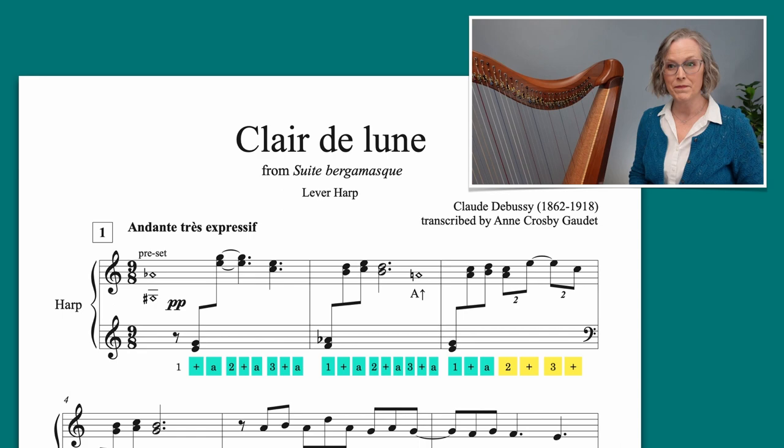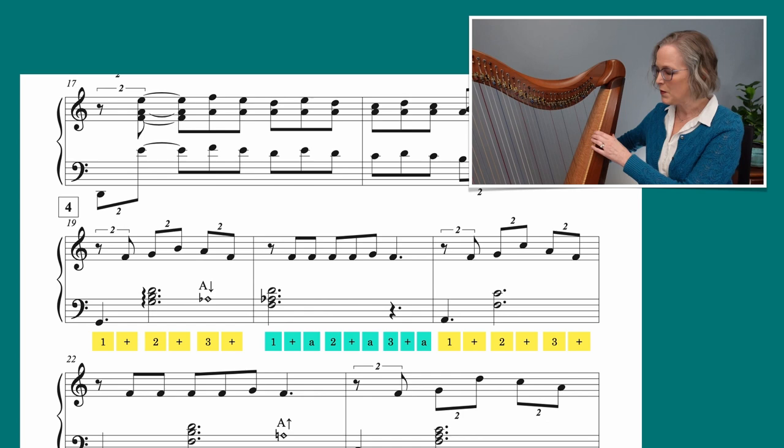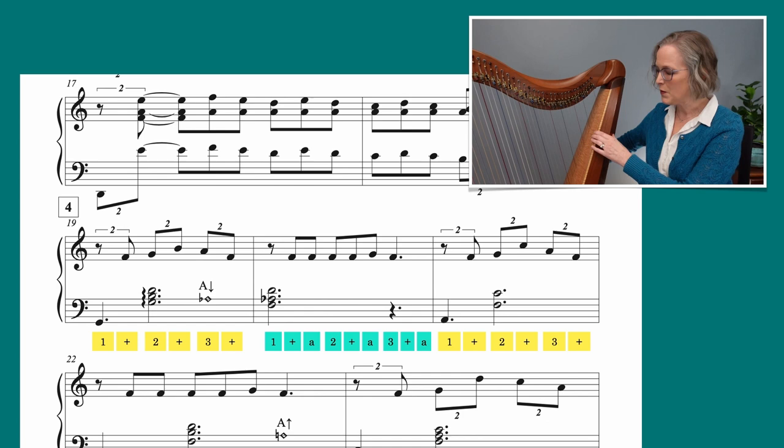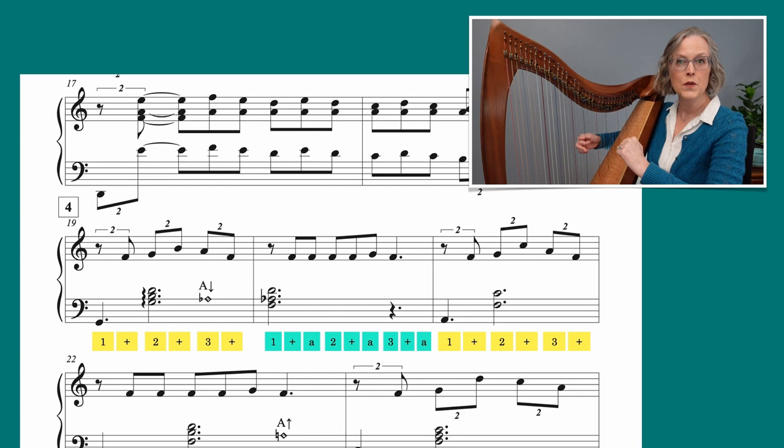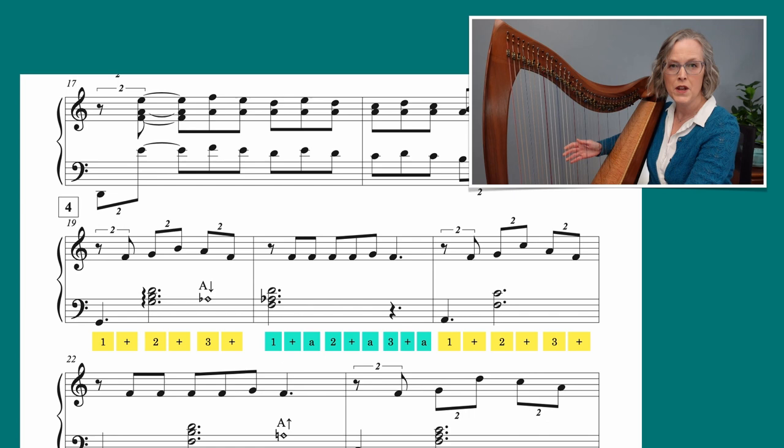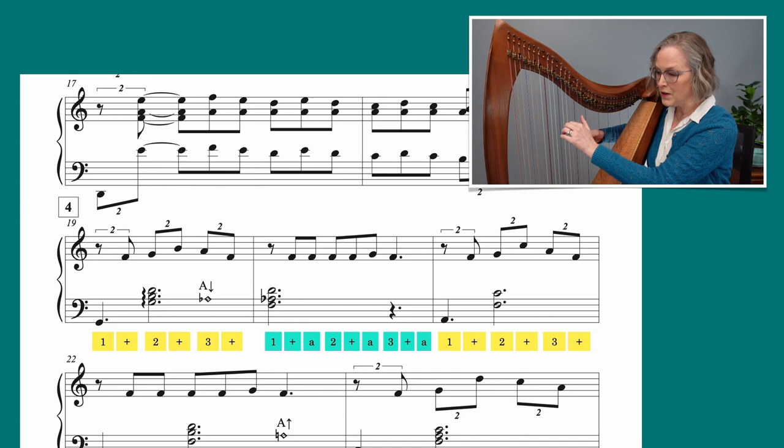Let's look at another section. Okay, here we are over in section number four. And here we have a measure of double subdivisions and then triples and then doubles again. So it's going to sound like one and, two and, three and. One and a, two and a, three and a, one and a, two and a, three and. Here's what it sounds like when I play. One and, two and, three and. One and a, two and a, three and a. One and a, two and a, three and a, one and, two and, three and.